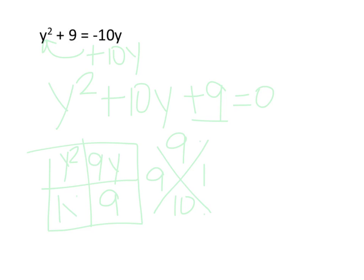So 9y and 1y here, and now I'm going to pull out my GCFs. This has a GCF of 1, that's a y, that's a y, and that's a 9. So when we pull those out...